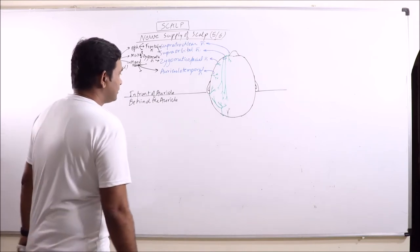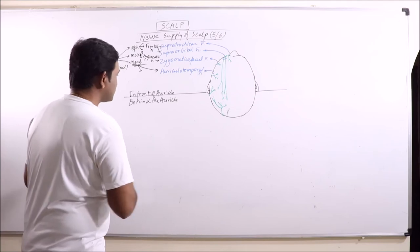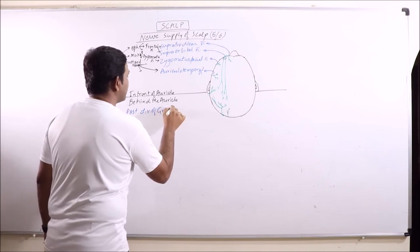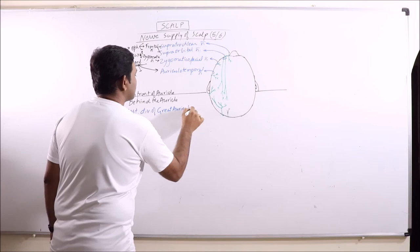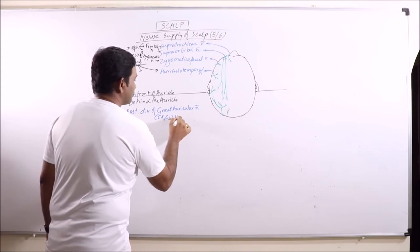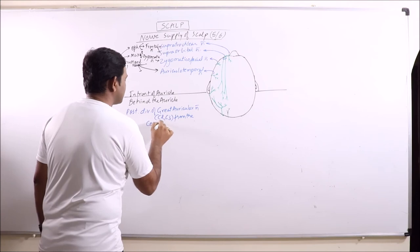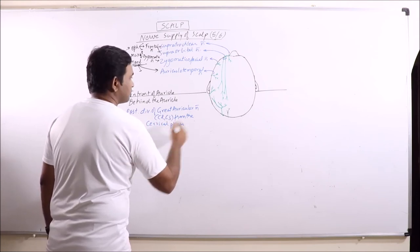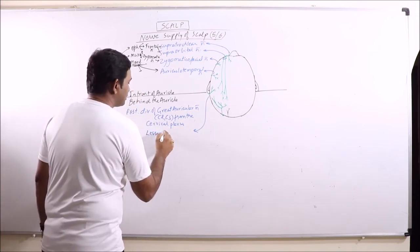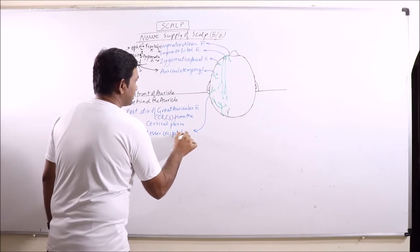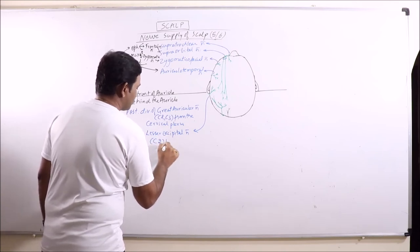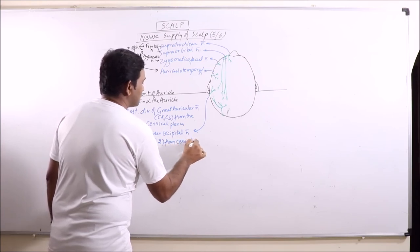Now behind the auricle there are some branches like posterior division of great auricular nerve, C2 to C3 from the cervical plexus.